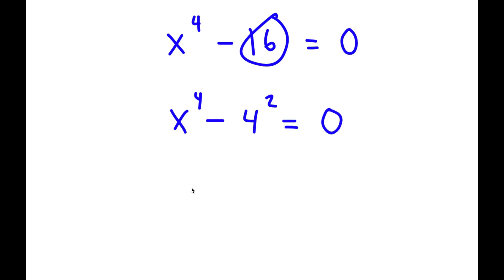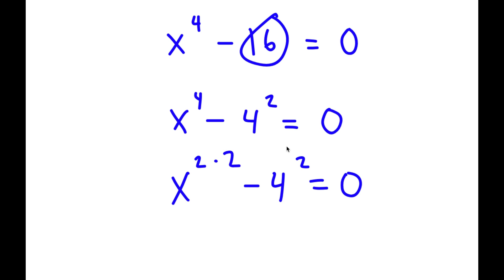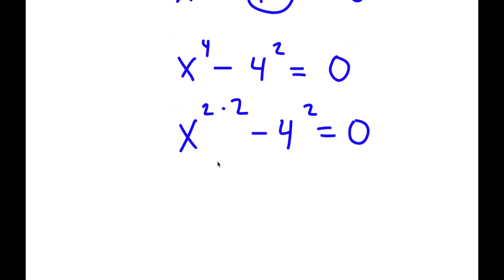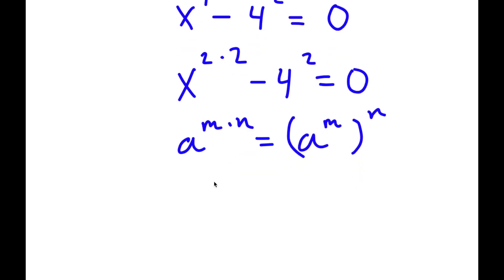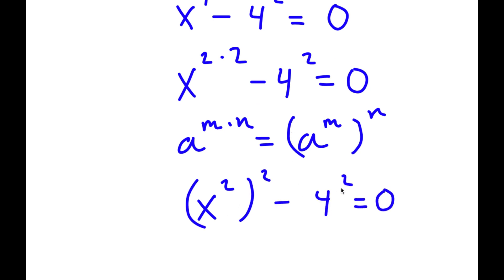Now, x to the power of 4 is the same thing as x to the power of 2 times 2. And if I have something in the form a to the power of m times n, this is equal to a to the power of m to the power of n. So x to the power of 2 times 2 equals x squared to the power of 2, minus 4 squared, is equal to 0.